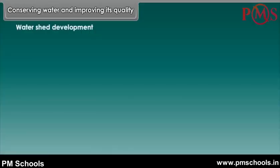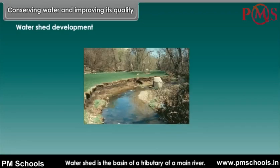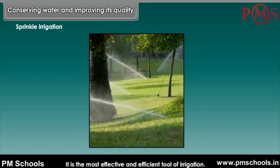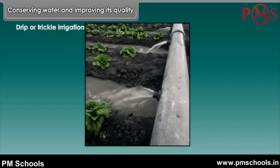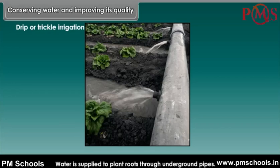Watershed development: a watershed is the basin of a tributary of a main river. Sprinkle irrigation is the most effective and efficient tool of irrigation. Drip or trickle irrigation is another type of irrigation used to conserve water, where water is supplied to plant roots through underground pipes.